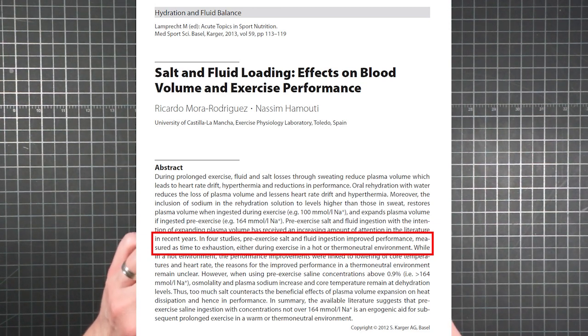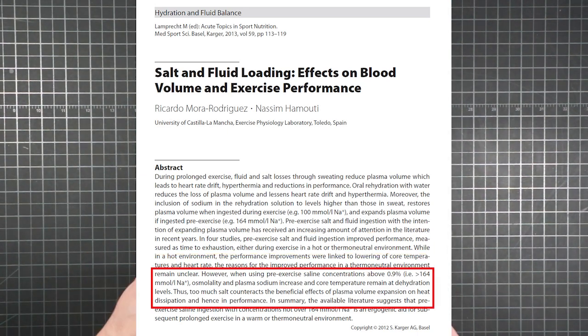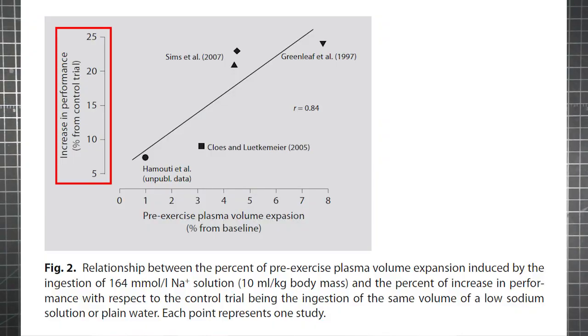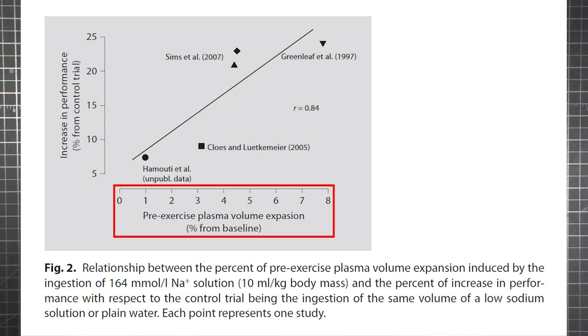This paper published in a journal from the American College of Sports Medicine looked at four studies that found improved performance measured as time to exhaustion from the pre-exercise ingestion of salt and fluid. They found that sodium drink concentrations up to 164 millimoles per liter were beneficial, but above that the salt starts to counteract the effects. Figure 2 shows the percent increase in performance found from ingesting that 164 millimole per liter solution across the four different studies considered.